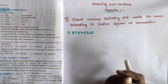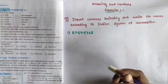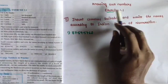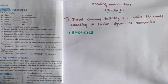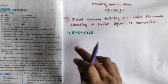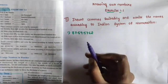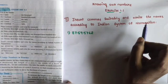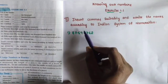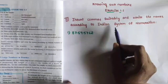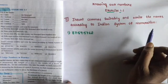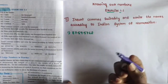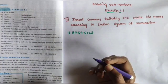Hi children, today I explain about the topic Exercise 1.1, Knowing Our Numbers. Thirdly, insert commas and write the names according to the Indian system of numeration.